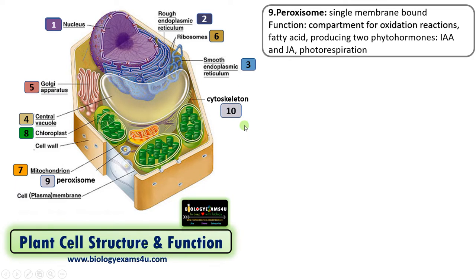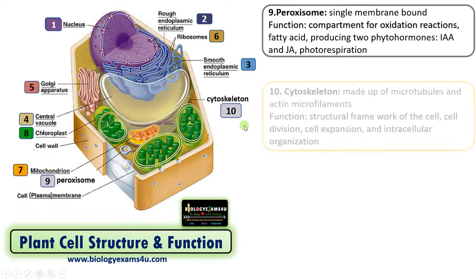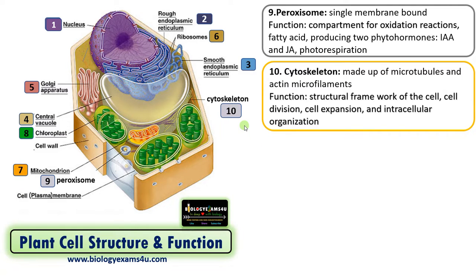The next structure is the cytoskeleton. Just like the skeletal framework of our body, it is the skeletal framework of the cell, made up of microtubules and actin microfilaments. The function is to provide structural framework for the cell. It is also involved in cell growth — especially in cell division, cell expansion, and intracellular organization or positioning of different organelles within the cell.